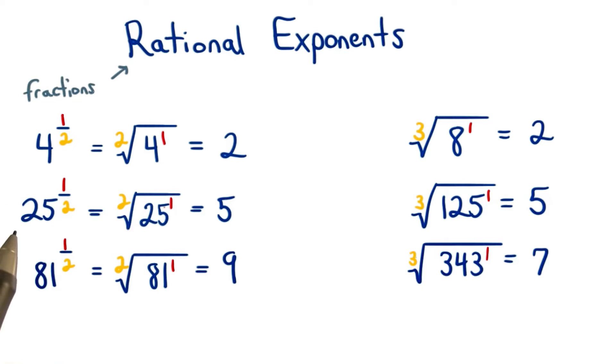The square root of 25 can be written as 25 to the 1 half, and the square root of 81 can be written as 81 to the 1 half.